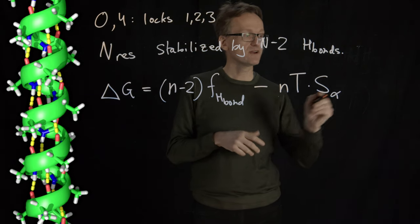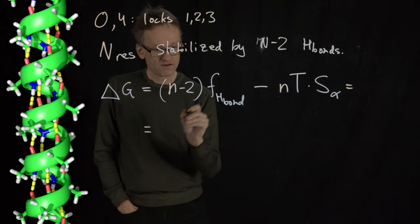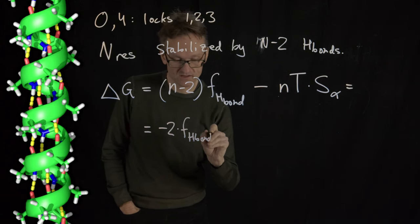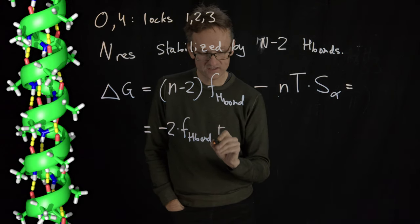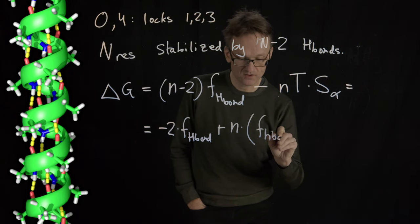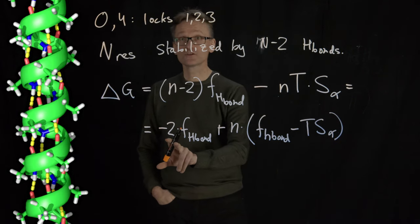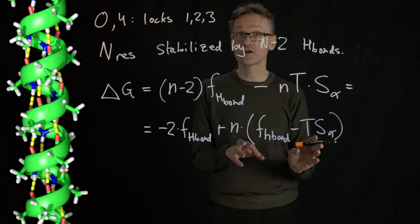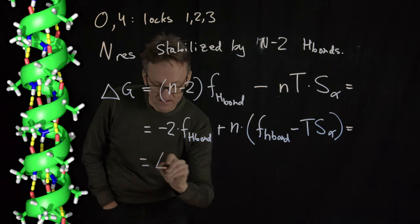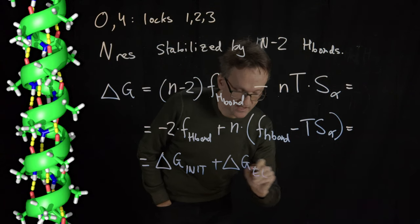So we have n in two places here. We can write this in a slightly different way. So what if I write this as minus 2 F H bond, that's constant, plus n multiplied by F H bond minus temperature S alpha. What this gives is one term here that's constant and one that depends on the number of residues in the helix. And we can write that as delta G init, plus delta G elongation or extension.